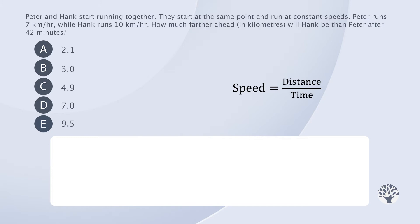This will be a speed, time, and distance calculation. The question provides us with information on Peter's speed, which is 7 kilometers per hour, and Hank's speed, which is 10 kilometers per hour. The question is: if they maintain these speeds for 42 minutes, what will be the distance between them?